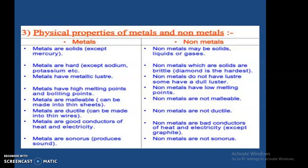Metals are malleable — they can be drawn into thin sheets — but non-metals are non-malleable. Metals are ductile and can be made into thin wires; non-metals are non-ductile. Metals are good conductors of heat and electricity; non-metals are bad conductors. Metals are sonorous and produce sound; non-metals do not produce sound.